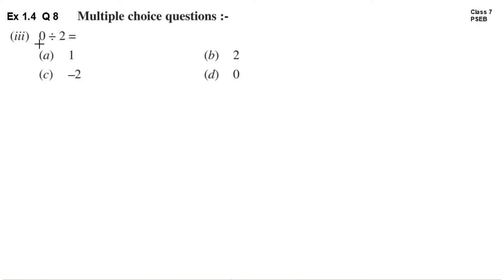Third part hai, 0 divided by 2. So 0 upon 2. This is equal to 0. 0 ko aap kisi bhi integer ke saath divide kar lo, answer hamesha 0 aata hai. So D is the correct option.